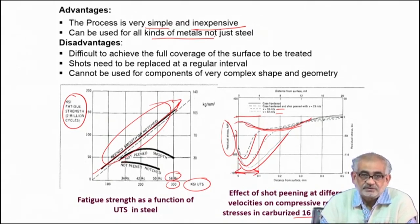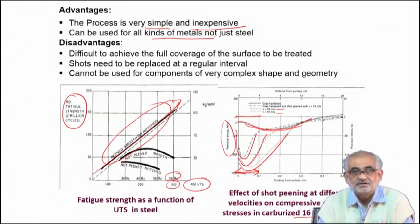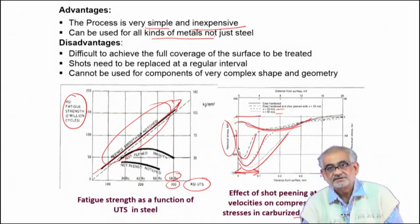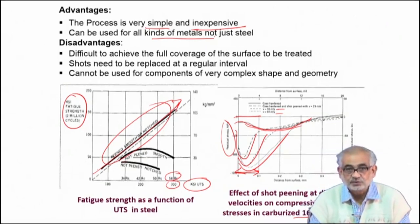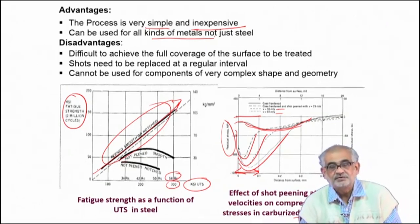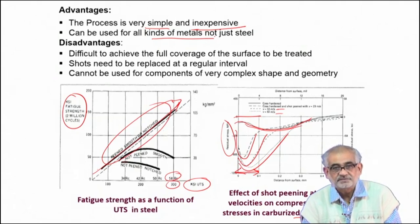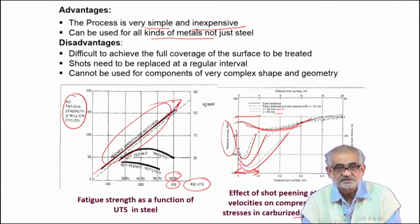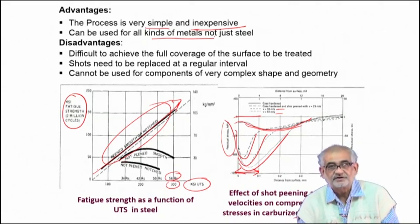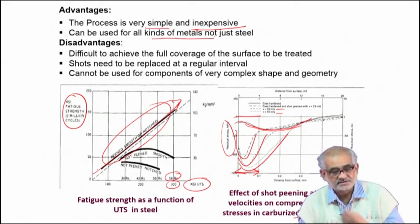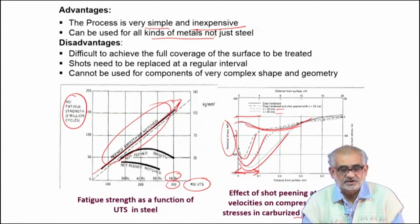For silicate glass, nitrides, carbides, or boride-coated components, it is very difficult to imagine that shot peening will create residual compressive stress on the surface, because there is no surface deformation possible by impacting with steel shots.